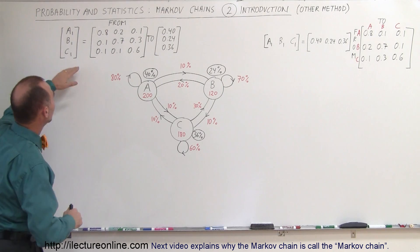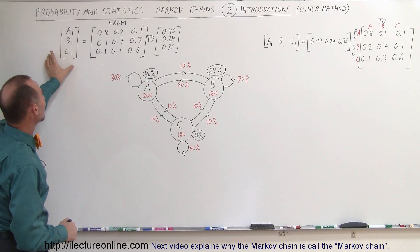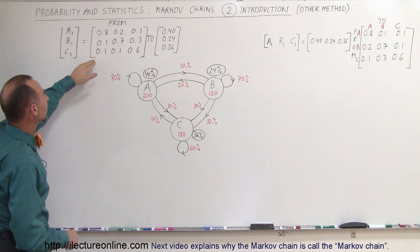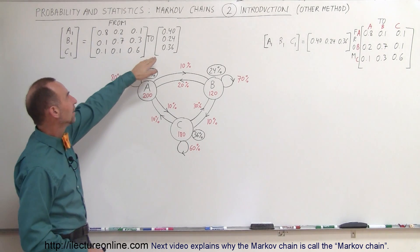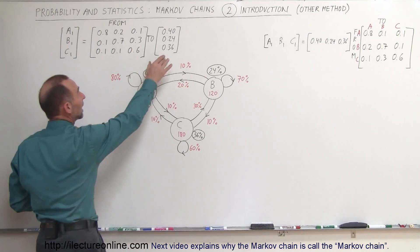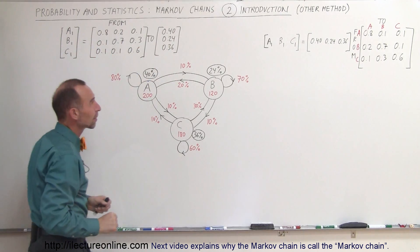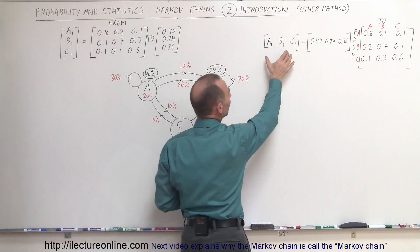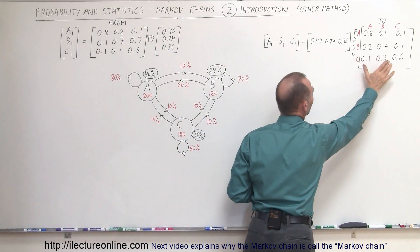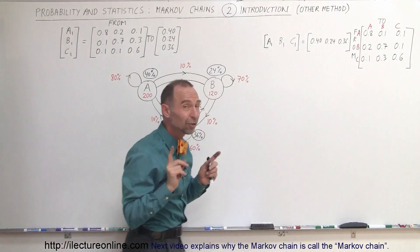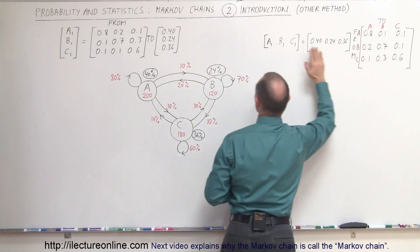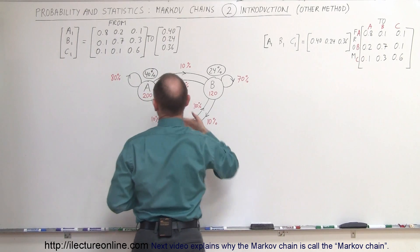Here you can see this is the way we showed it the first time. This is what we call the future method or the predicted method. This is the probability matrix and there's the current matrix — meaning this is the current state and this will be the future state. Over here, we have the future state, here we have the current state, and there's the probability matrix. And if you look carefully, the probability matrix here is transposed compared to the probability matrix there.